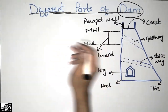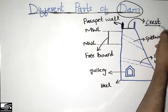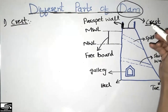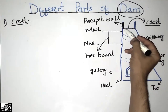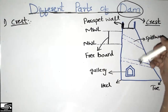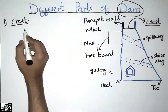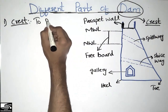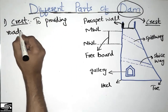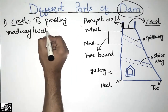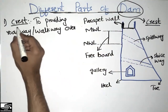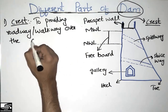The first part of the dam is the crest. The crest of the dam is the top surface of the dam, which is provided to give a walkway or roadway for travelers to move on the top of the dam. So the crest is the top surface providing a roadway or walkway over the dam so one can travel over it.